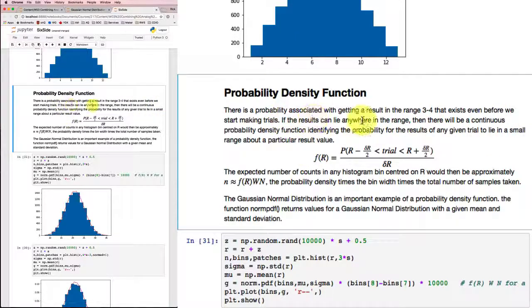And if the results can lie anywhere in the range, then there's a continuous probability density function. We could get 3, we could get 3.14159, we could get pi or something really close to pi anyway. So we've got a continuous range there. So we can talk about the probability density as identifying the probability for the results in a small region for any given trial.